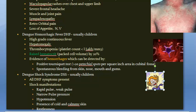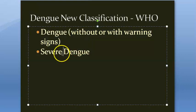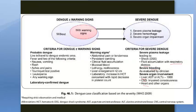Additional shock signs include cold and clammy skin and restlessness. The new WHO classification is: dengue without warning signs, dengue with warning signs, and severe dengue.